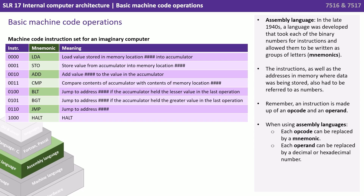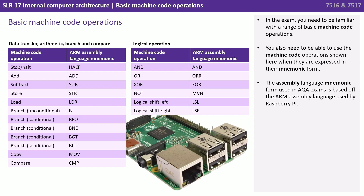Remember, an instruction is made up of an opcode and an operand. When using assembly languages, each opcode can be replaced by a mnemonic and each operand can be replaced by a decimal or hexadecimal number. In the exam you need to be familiar with basic machine code operations, and you also need to be able to use the machine code operations shown here when they're expressed in their mnemonic or shorthand letter form.